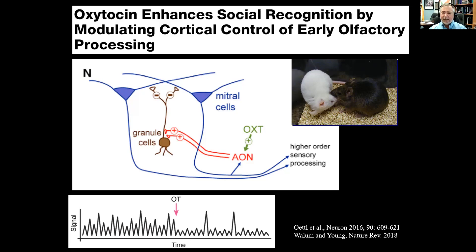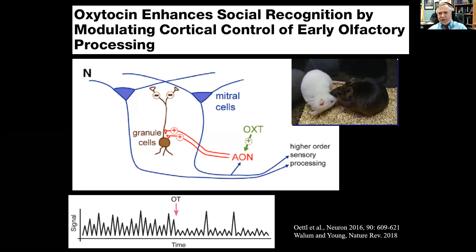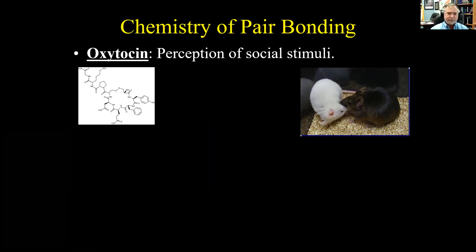I think of oxytocin as being like a television screen with static — normally there's just a lot of static — but if you could turn a dial and have all the static go away, the image comes through much clearer. That's what's happening in the brain, not only in the olfactory bulb. Robert Frumpke has shown the same thing is happening in the auditory cortex as well. I think it's a common theme: helping the flow of high-integrity social information throughout the brain.